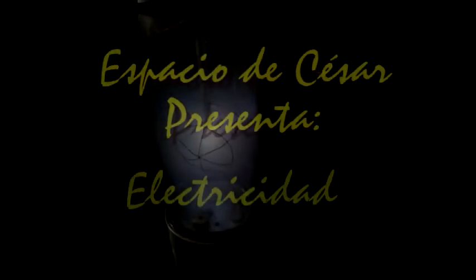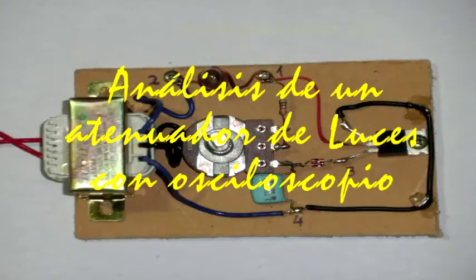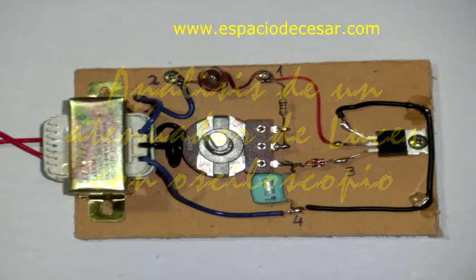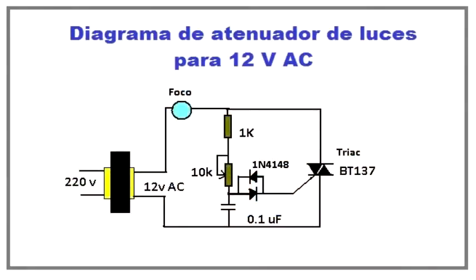Following the practices for the use of the oscilloscope, we are going to analyze a simple circuit of just a few components. It is a dimmer or also called a light bulb attenuator, a quite known device that will serve us to practice with our oscilloscope for PC using the Visual Analyzer.